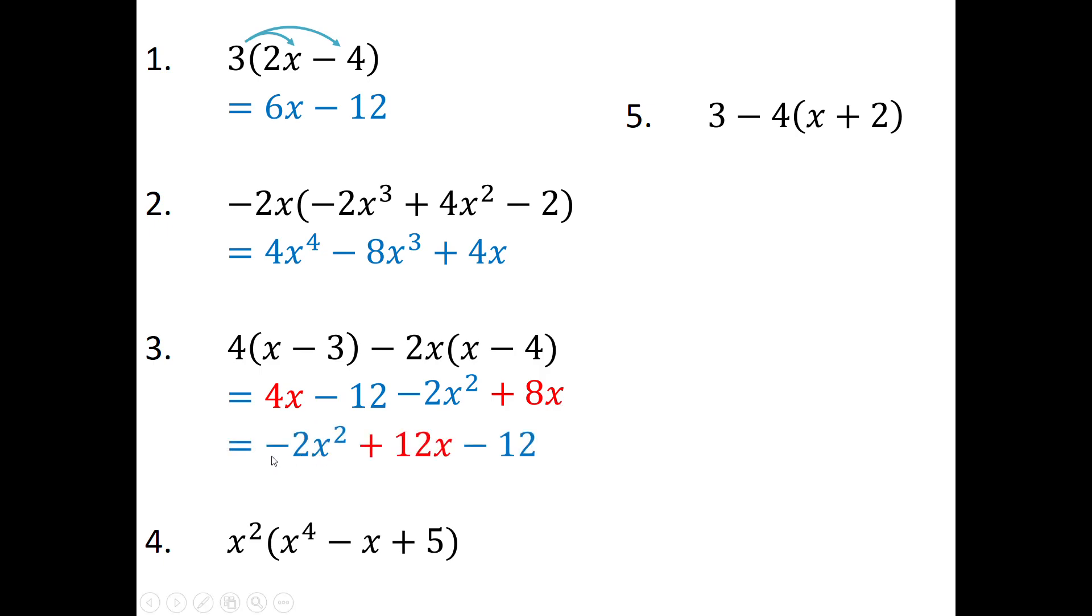If I add those, I'm going to get 12x. All I've done in my final answer is I've written the expression in descending powers of x, so x squared, x to the power of 1, and then no x. That's the format that you like to leave it in. Number 4, x squared times x to the power of 4. I need to add exponents, so I'm going to have x to the power of 6.